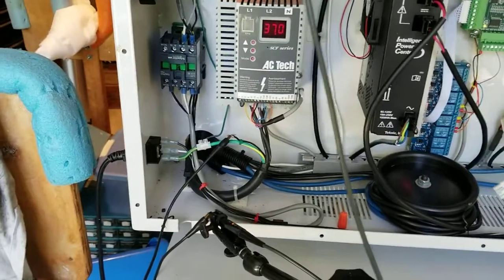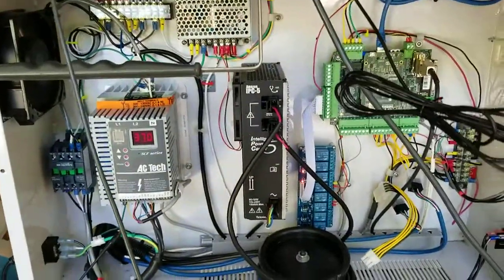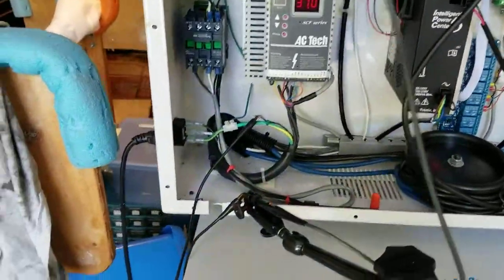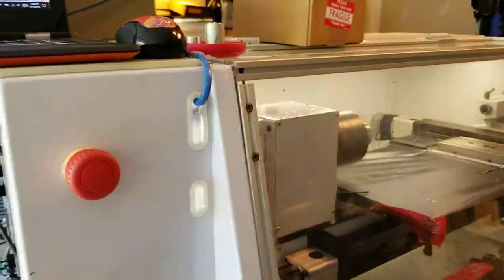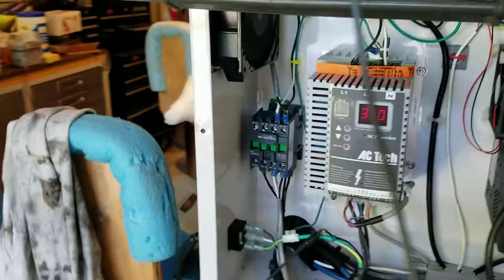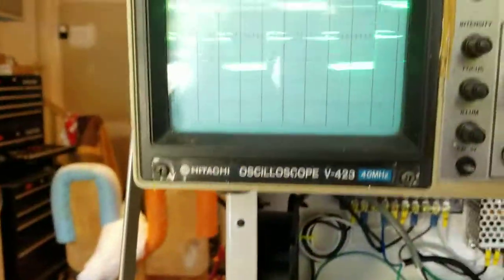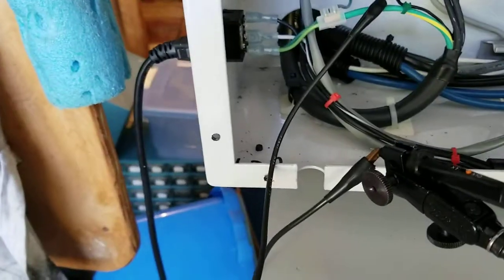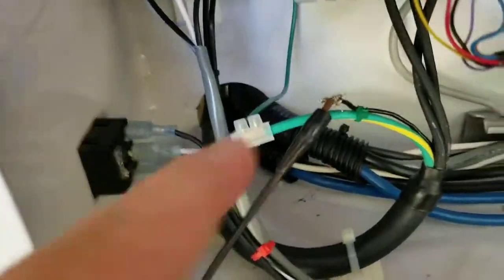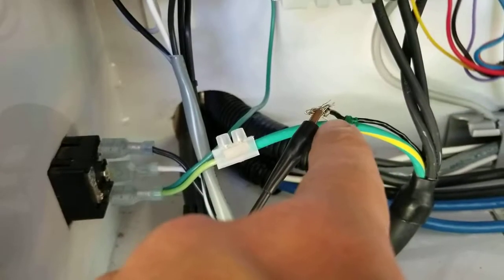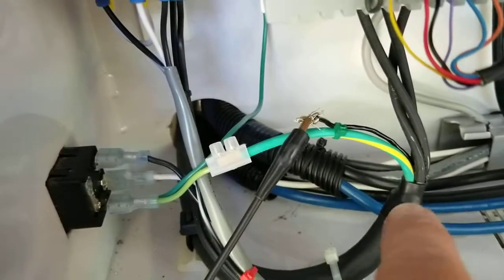What I have set up here is the lathe up and running at a moderate speed of 600 RPMs, and I positioned an oscilloscope which is measuring a waveform coming directly off the shield wire of the VFD cable.